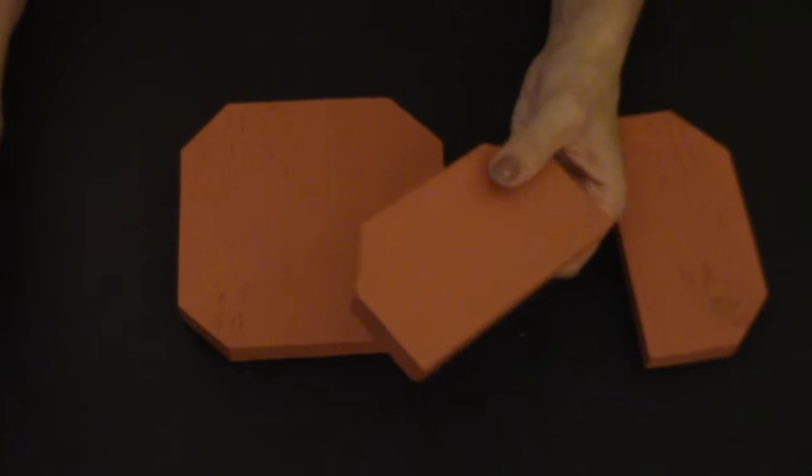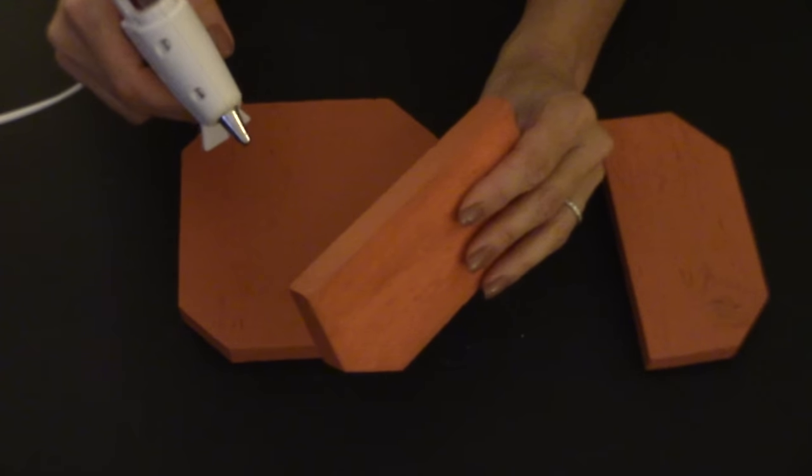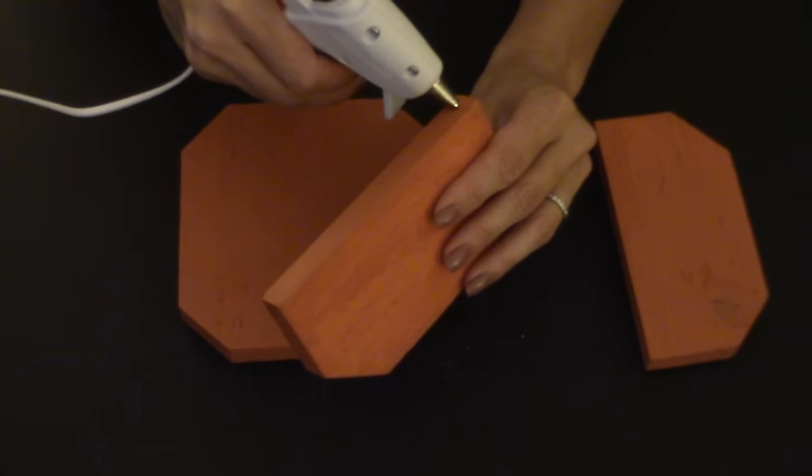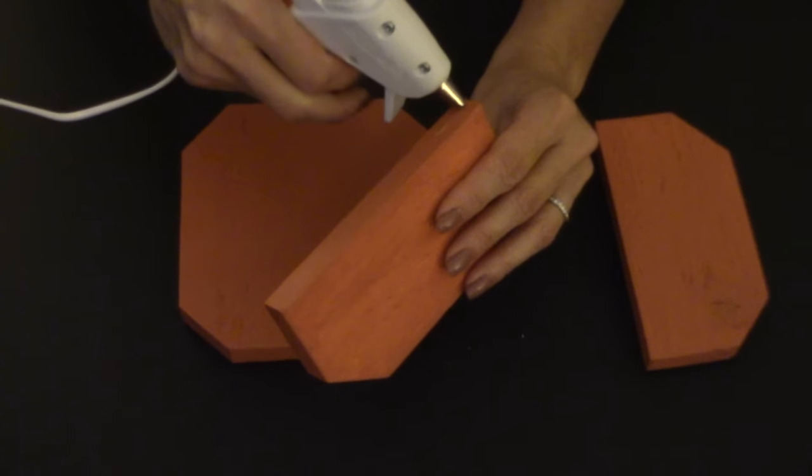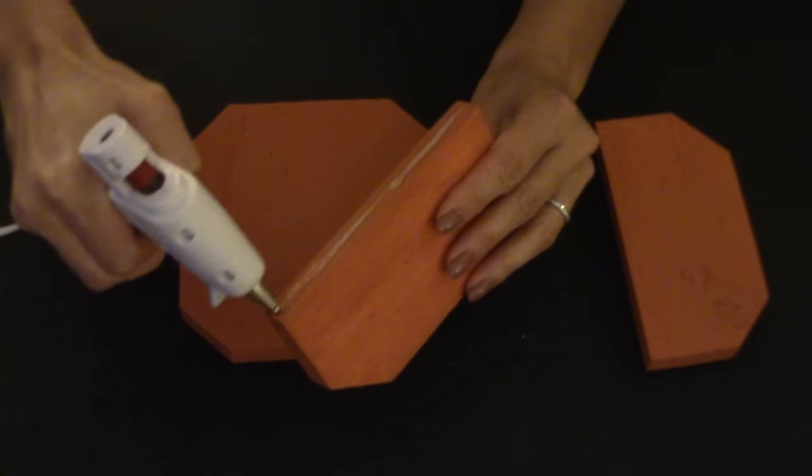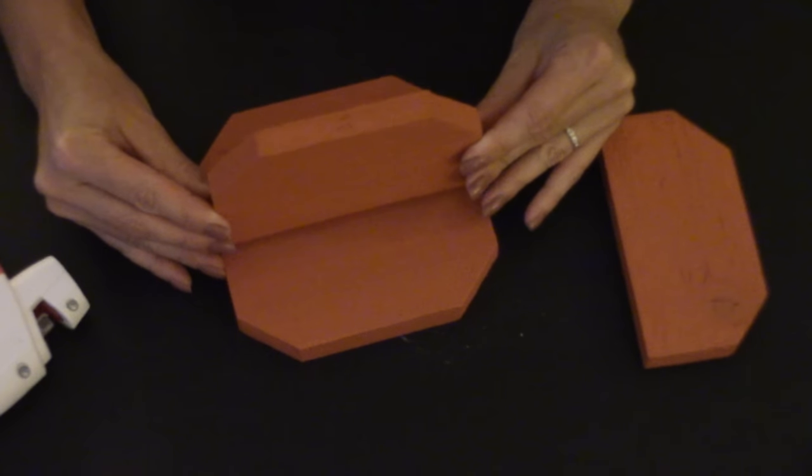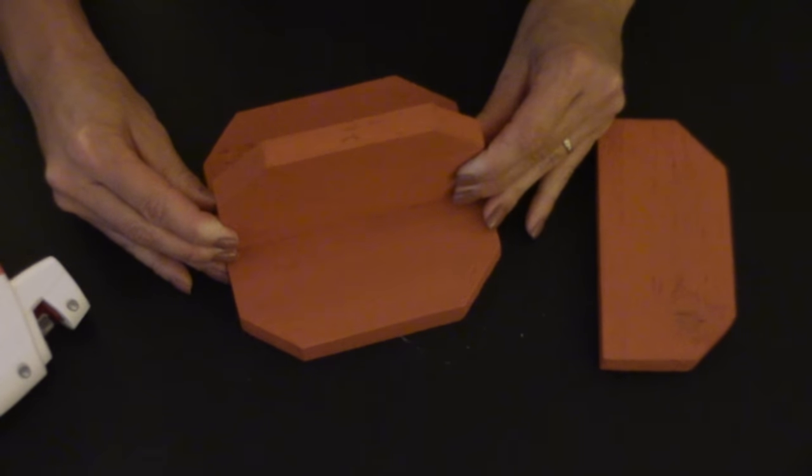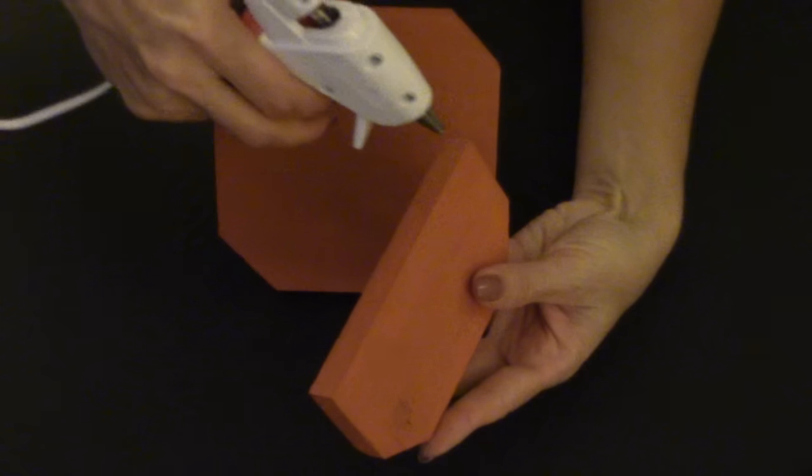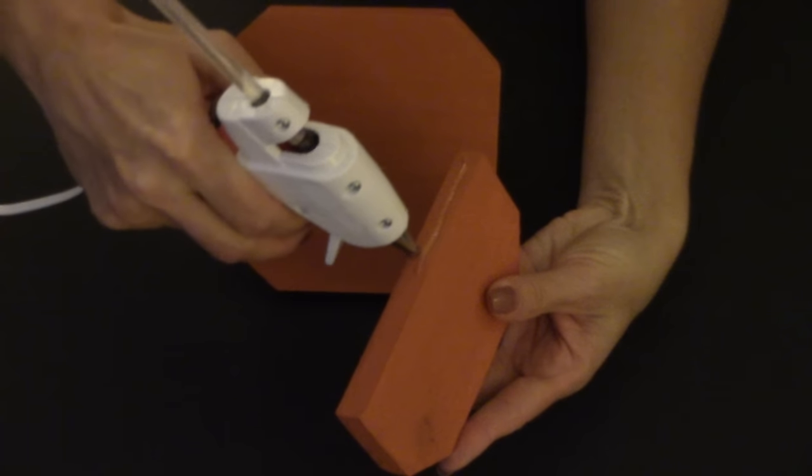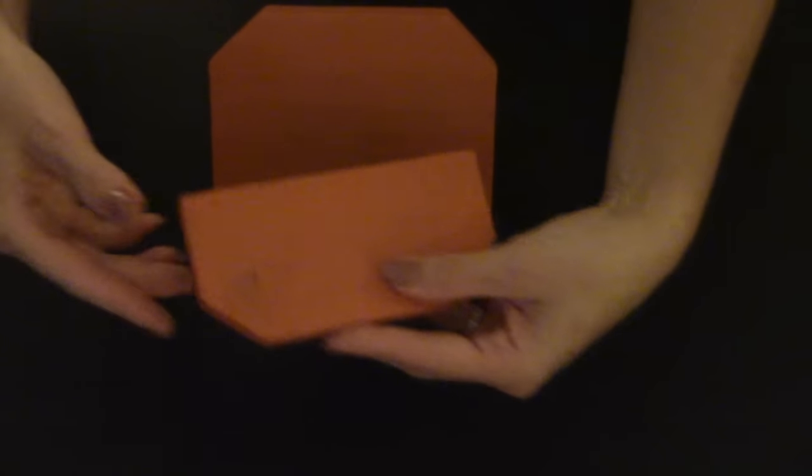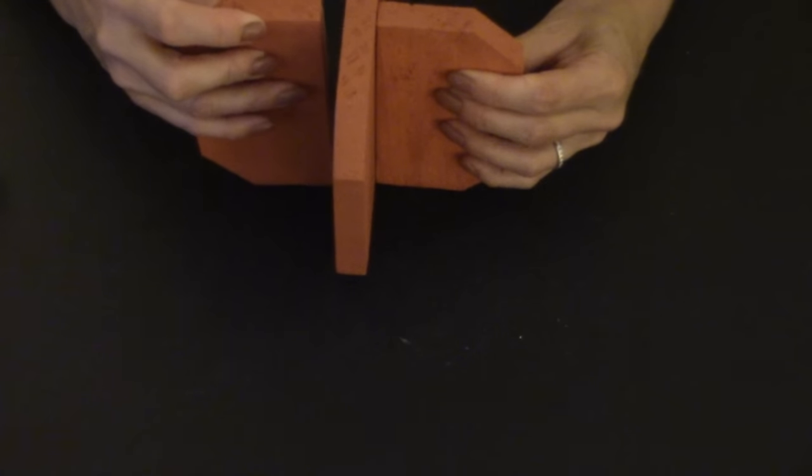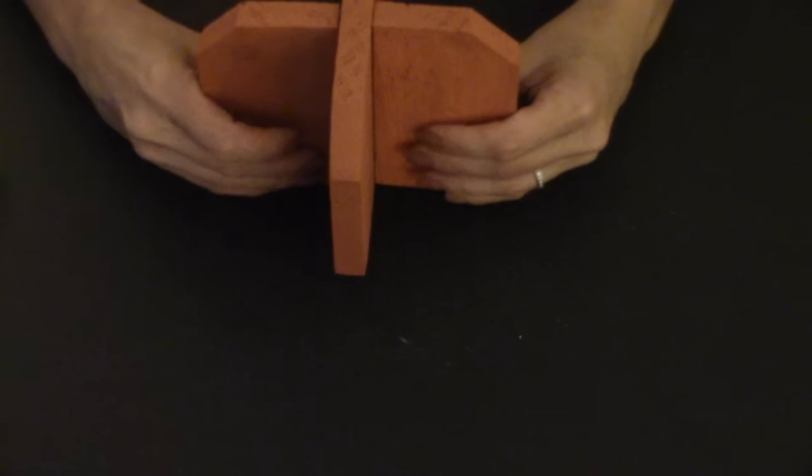Now we're going to take our hot glue gun, and I am going to put some hot glue right along the edge here of this piece, and I am going to center it onto the top of this piece here. I'm going to take this last piece and do the same thing to the other side. Now if you'd like to use E6000, you can. I'm using hot glue just because it dries a bit faster.